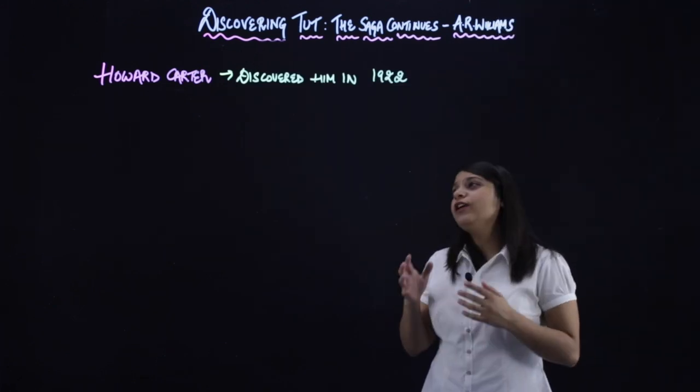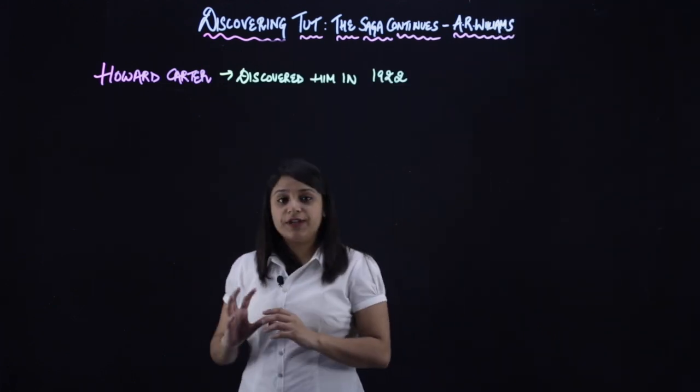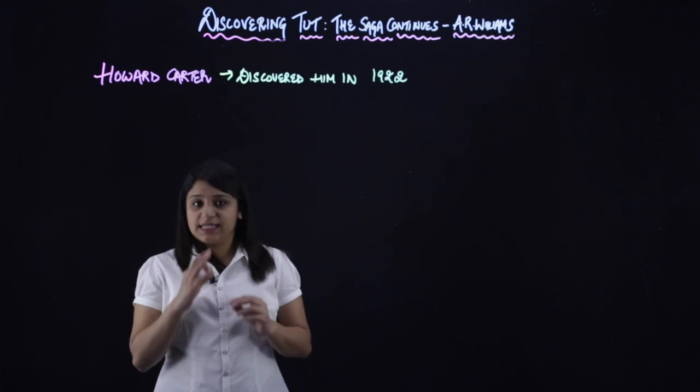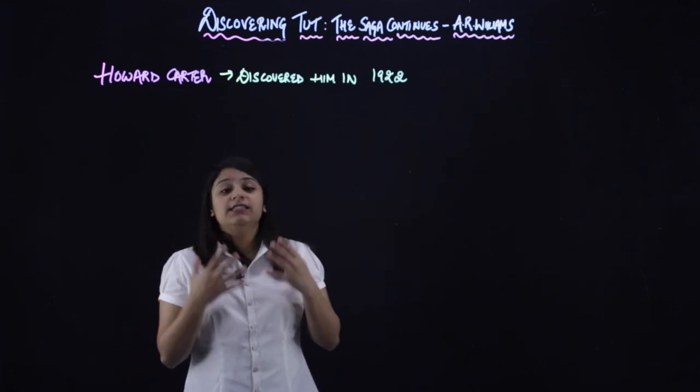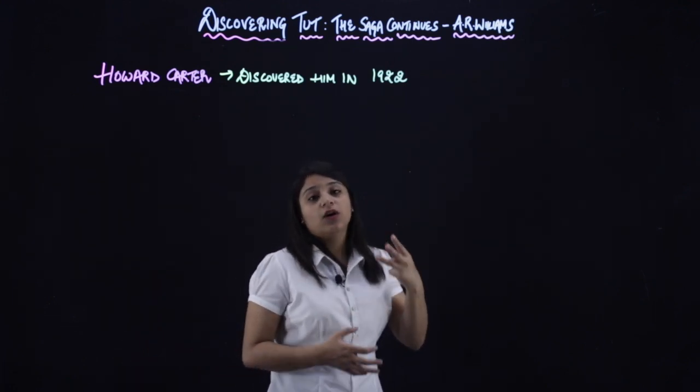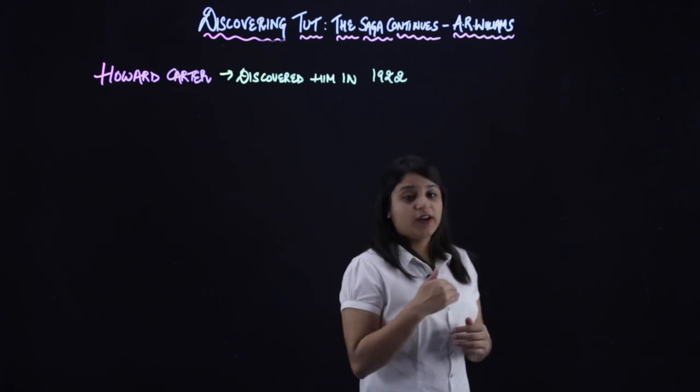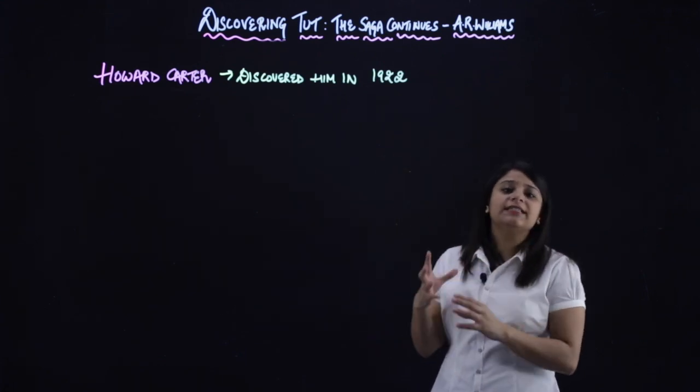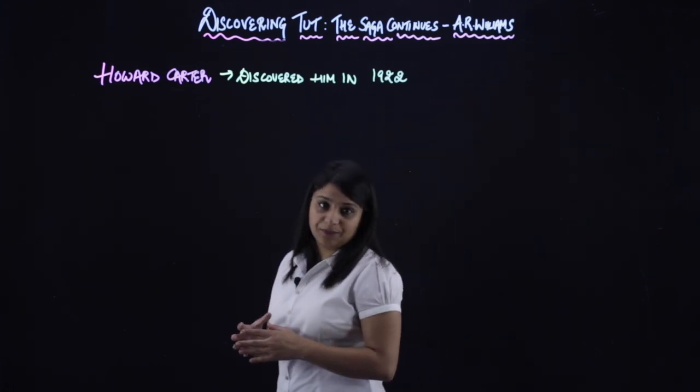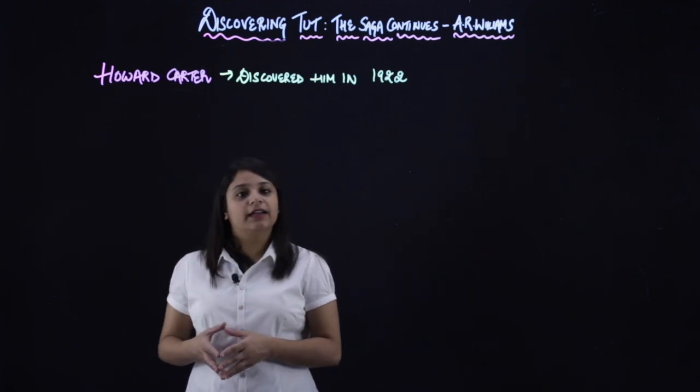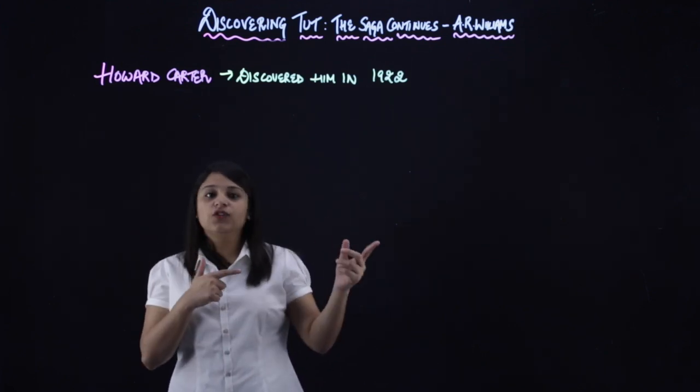So now, if we go back to Howard Carter's discoveries, as I told you that Tut's body was kept in three layers of gold coffin. So in his discovery, he saw what was inside. That is, what was inside those layers. So let's see what he found.